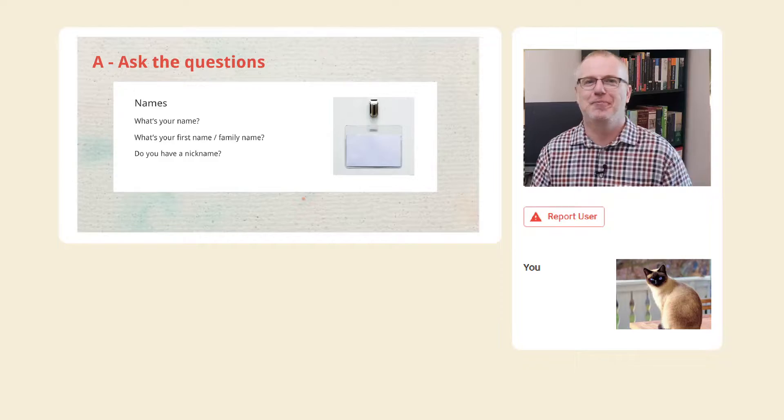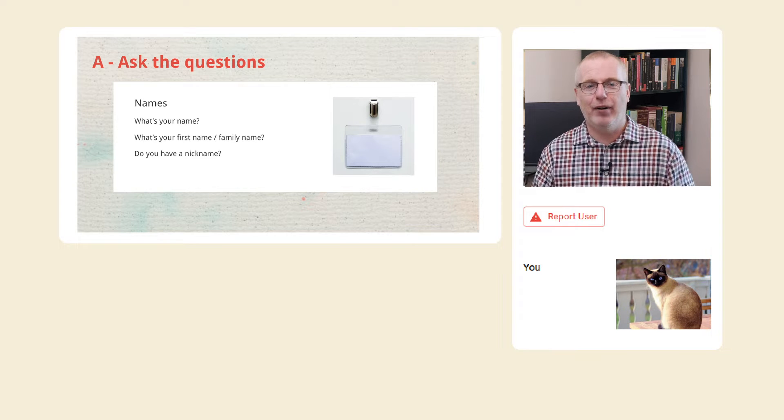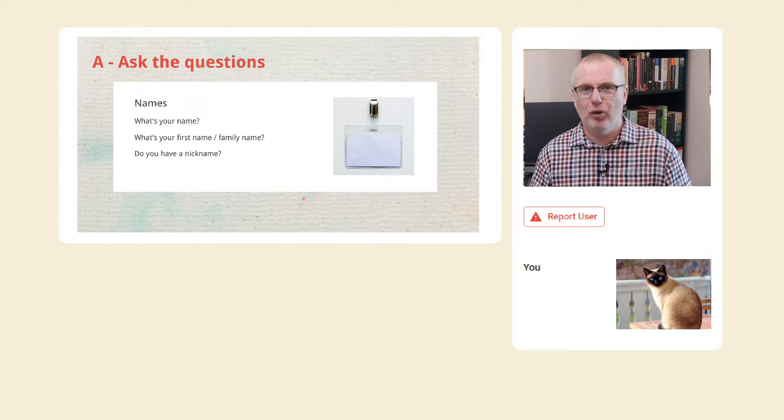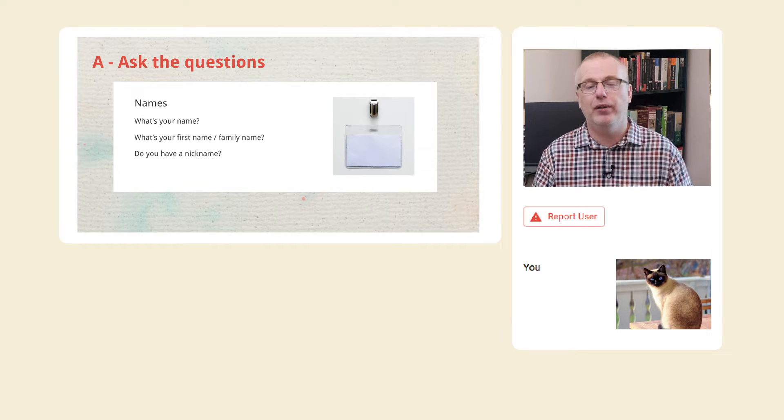For the speaking stages, I'll put you into pairs. If there's an odd number, there'll be one group of three, and you may have to improvise a little. When a speaking stage starts, this video will disappear and you'll see a screen like this. There's an activity on the left, and there are webcams here. You'll be able to see your own webcam on the bottom, and your partner's webcam on the top. Sometimes you and your partner will have the same materials, but normally you'll see different things. One of you might have a picture, and the other some questions.